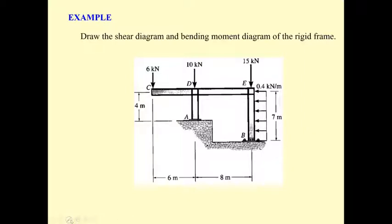Based on the shape, support A is considered a roller and support B is a pin. We will draw the whole frame free body diagram, then compute the three reactions using three equations of equilibrium. After that, we separate the beam into four pieces and analyze the end shear force and end moment. Finally, we draw the shear diagram and moment diagram using the graphical method.